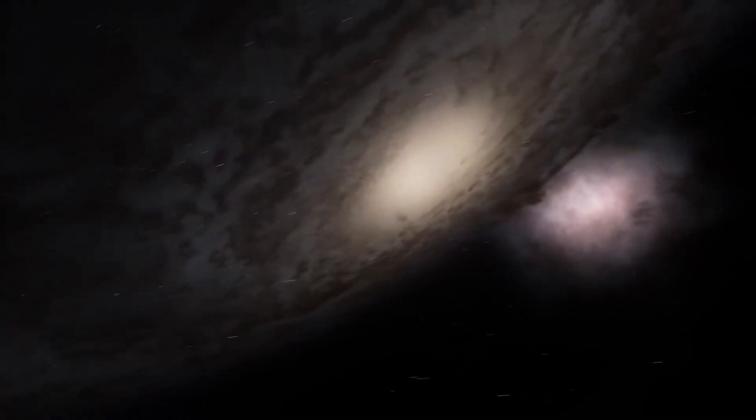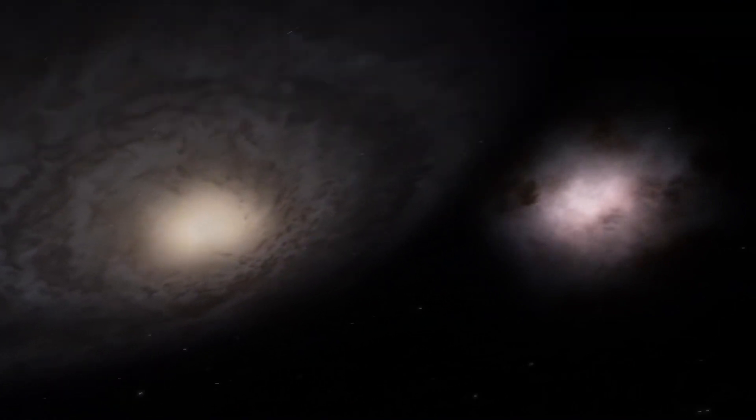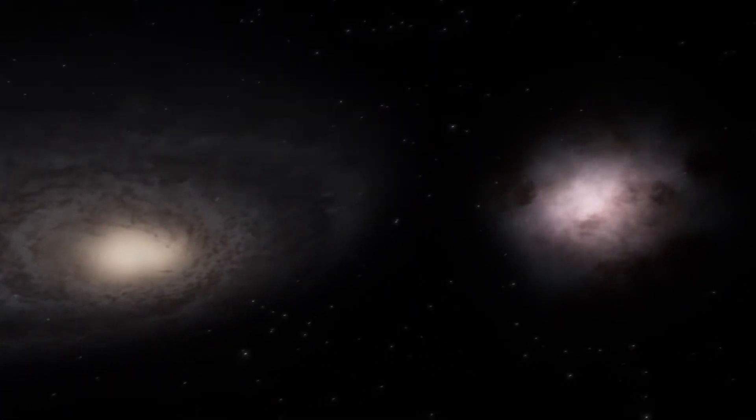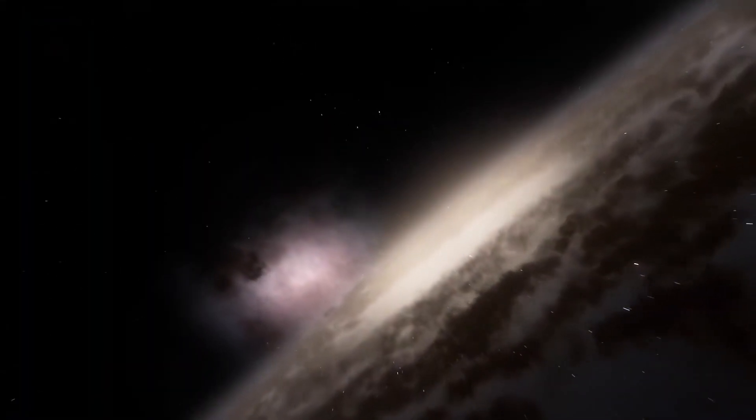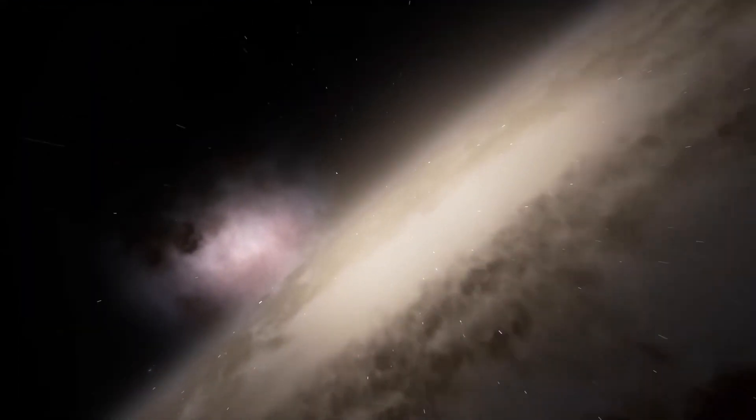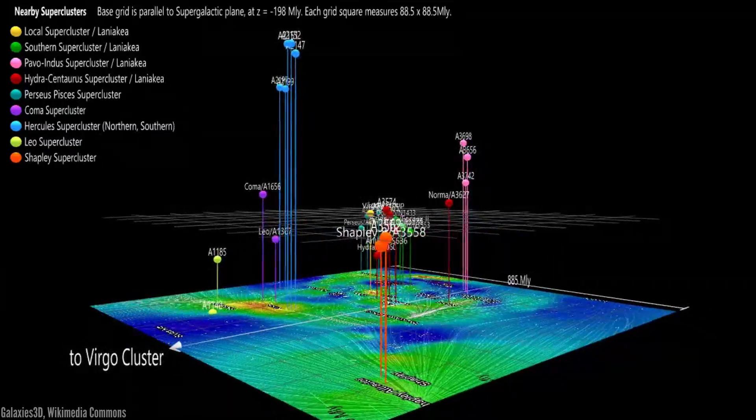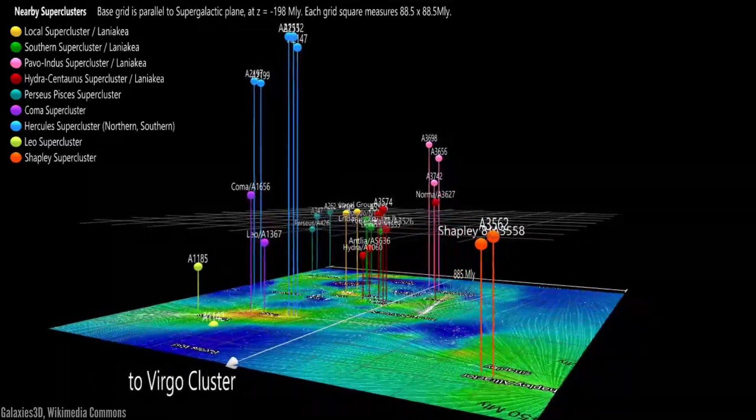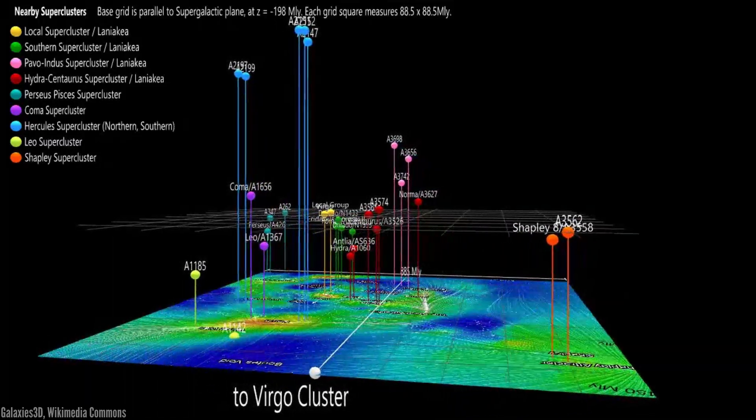The Milky Way, in turn, is part of a cluster of galaxies called the Local Group, which in addition to the Milky Way, includes about 100 other galaxies. But these clusters of galaxies are also grouped into the Local Supercluster of Galaxies, or as it's also called, the Virgo Supercluster.